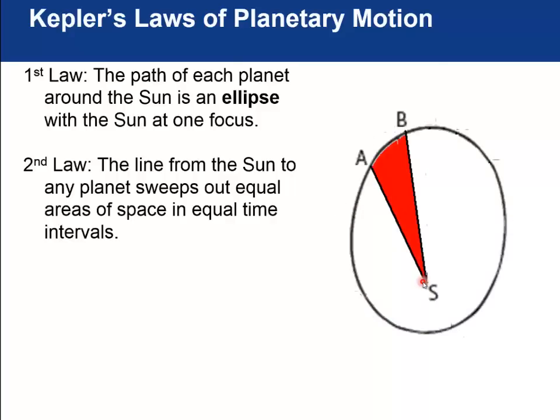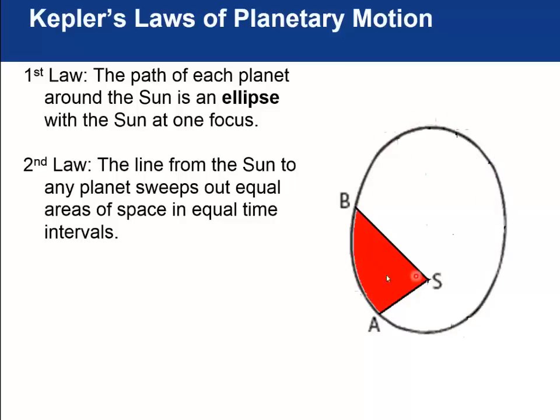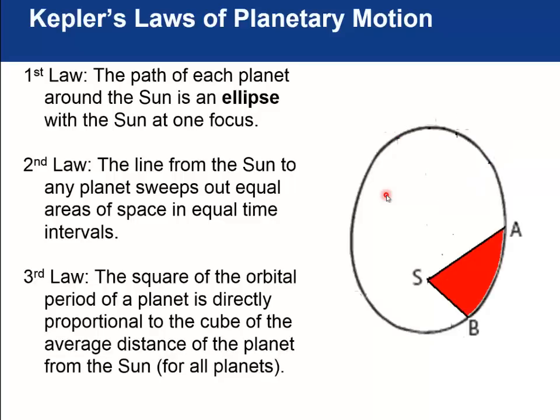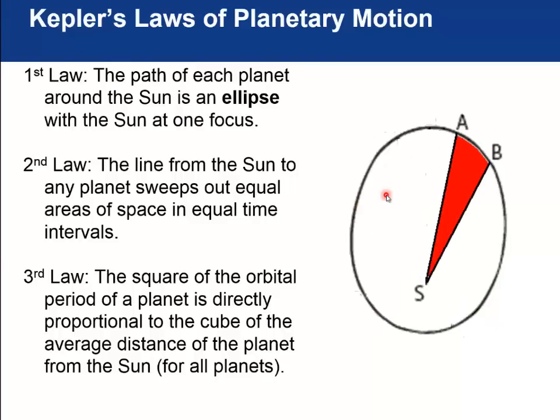So the second law states that the line from the sun to the planet sweeps out equal areas of space in equal time intervals. And so what's being shown in this little gif animation is two times a and b that are separated by the same amount of time as you go around. So each triangle there has the same amount of area. So the planet slows down when it's far from the sun and speeds up when it's close to the sun in such a way as to keep this area always equal. Kepler didn't know why this was happening, but the reason is that when you're closer the force is greater due to Newton's law, and so it has to go faster in order to stay on this path.